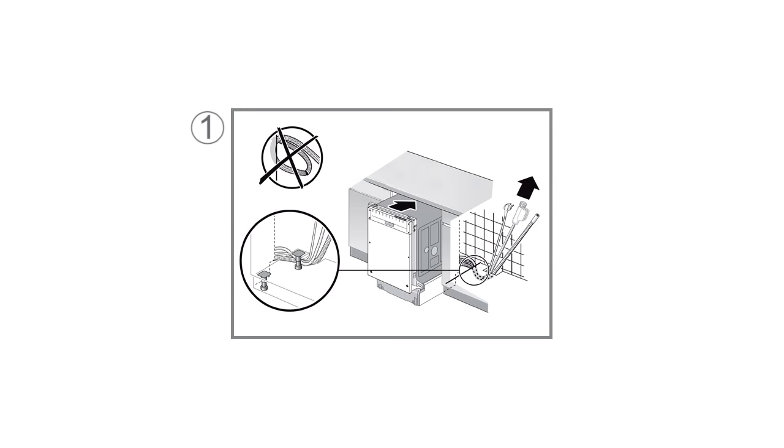The first step is to pull out the dishwasher and check that the hoses behind the appliance are not trapped or kinked. If the dishwasher is built in, you will need to access the cupboard from the side. If you are not sure how to do that, please follow the mounting and installation instructions of the dishwasher.